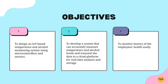These are the objectives of our project. The first is to design an IoT-based temperature and alcohol monitoring system using microcontrollers and sensors. The second objective is to develop a system that can accurately measure temperature and alcohol levels and transmit the data